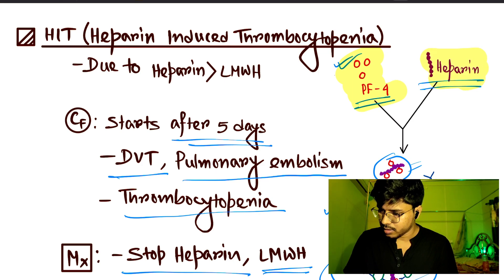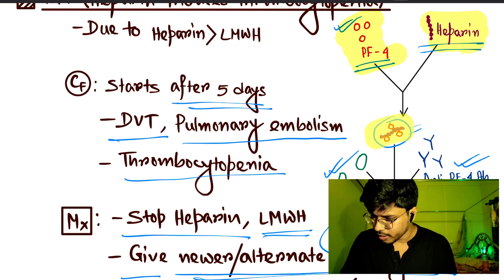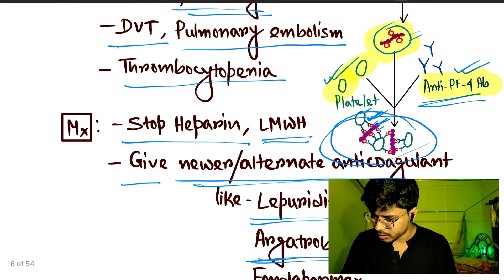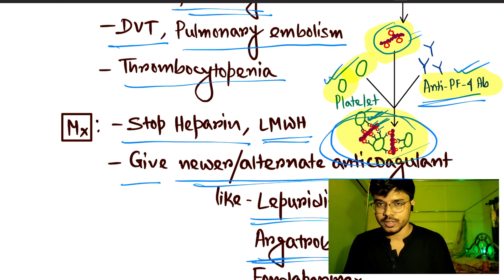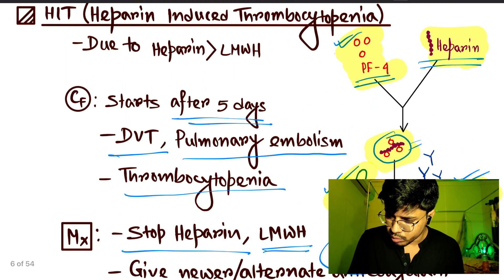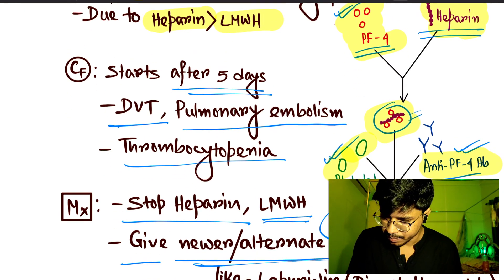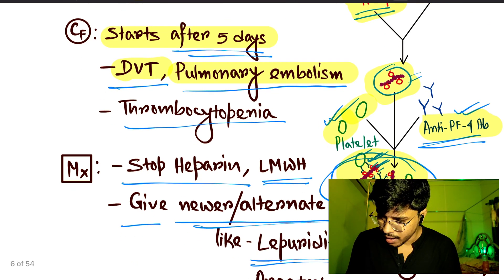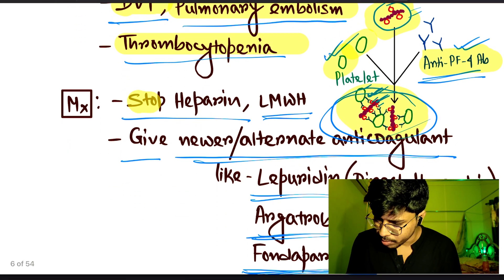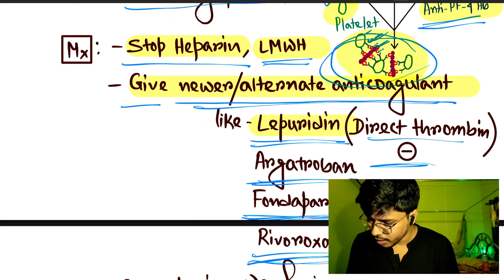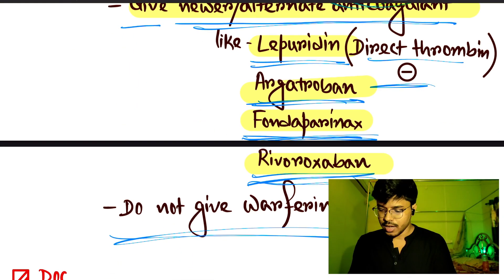Quick recap: PF4 and heparin form a complex; platelet and anti-PF4 antibody attach to this complex. Caused by heparin or LMWH. Clinical features start after five days: DVT, pulmonary embolism, and thrombocytopenia. Management: stop heparin or LMWH, give lepirudin, argatroban, fondaparinux, or rivaroxaban. Do not give warfarin.